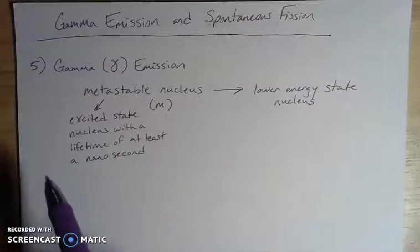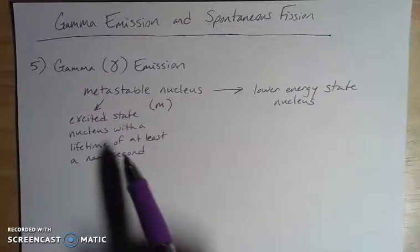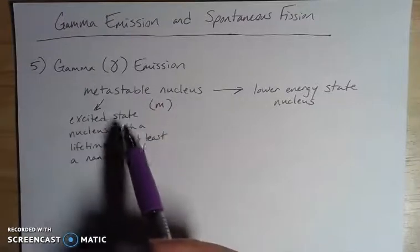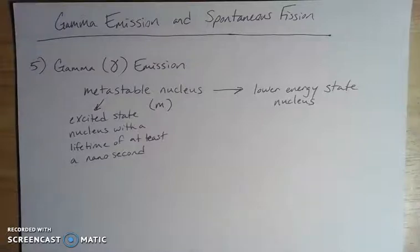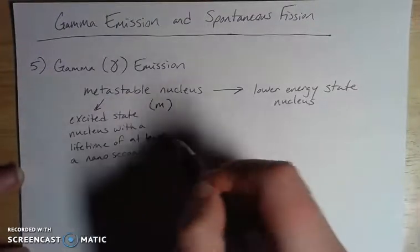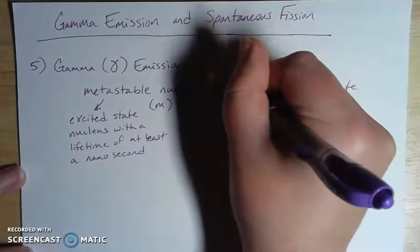So the actual reaction itself and showing the equation for it is a little bit uninteresting, I think, because it's really just going from a nucleus with an m on it to a nucleus that's the same thing, but it's at a lower energy, more stable configuration. And the only thing that's changed then is this gamma decay.